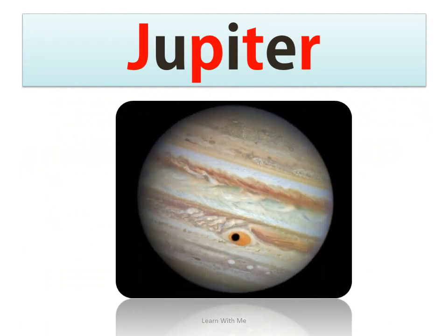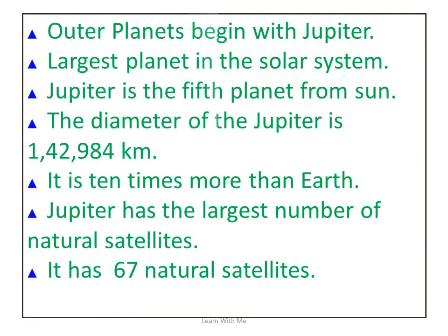The outer planets begin with Jupiter, the largest planet in the solar system. Jupiter is the fifth planet from the Sun. The diameter of Jupiter is 142,984 kilometers, which is 10 times more than Earth. Jupiter has the largest number of natural satellites — it has 67 natural satellites.